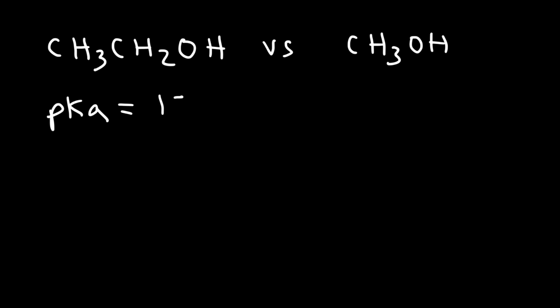Now let's look at another example. So here we have ethanol and on the right methanol. Which one is the stronger acid? Ethanol has a pKa value of 15.9 and methanol has a pKa value of 15.5. So they're very close in terms of acidity, but one is slightly more acidic than the other. As we said before, the molecule with a lower pKa value is the one that's going to act as a stronger acid. So 15.5 is less than 15.9, so therefore methanol is slightly more acidic than ethanol.